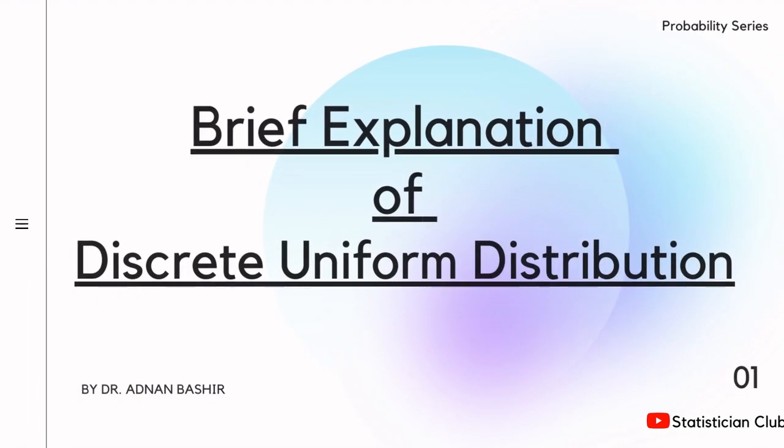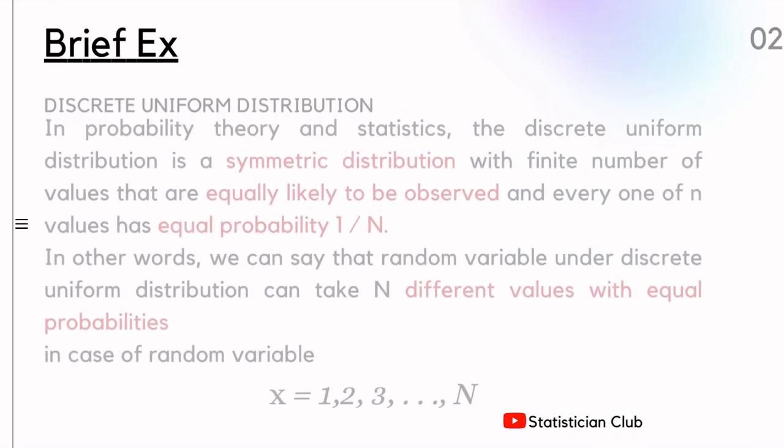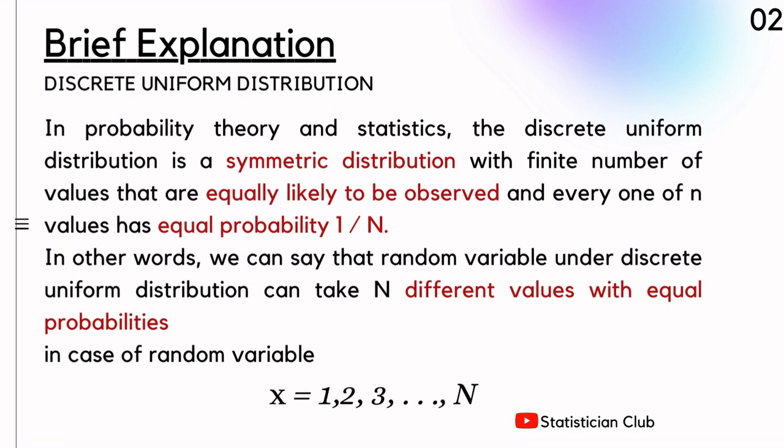In this video, I explain about Discrete Uniform Distribution. Discrete Uniform Distribution is a type of symmetrical distribution with a finite number of values and each value is equally likely to be observed.